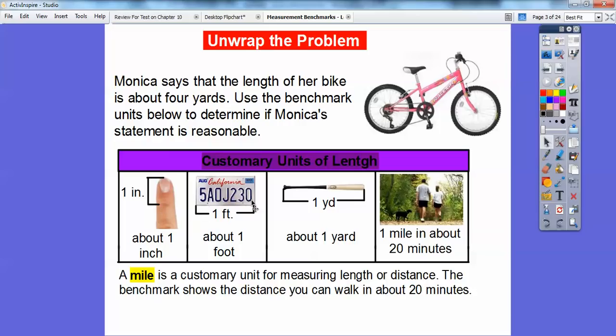And then if you look at a license plate on the back of a car, the license plate is about one foot. A baseball bat is about one yard. And if you went for a hike and you walked for about 20 minutes, you'd walk about a mile in about 20 minutes. So a mile is just a customary unit of measurement for length, and actually in a mile there's 5,280 feet, but we don't need to know that. Here's an estimation that it would take us about 20 minutes to walk a mile.